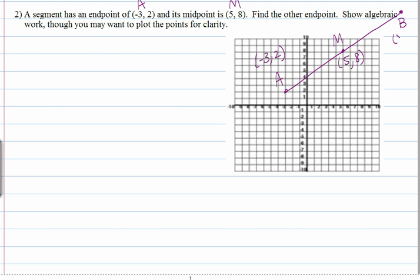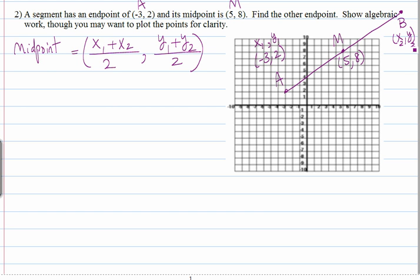And we'll call that X, Y. Now we know midpoint of two points is the average of the two X's, and the average of its two Y's. Okay, so this is our X1, that's our Y1. This is our X2, Y2, that's what we're solving for, and this is the midpoint.